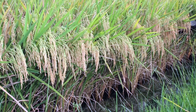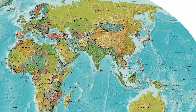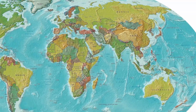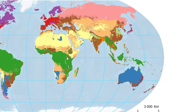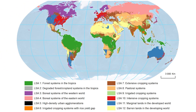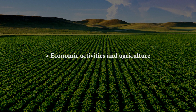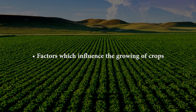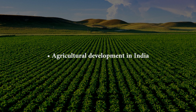In spite of all these odds, India has made commendable progress in agriculture after independence. In the era of globalization and liberalization, all the countries are interdependent and change in one country influences life in other parts of the world. In this chapter on agriculture, we will learn about agriculture not only in India but also in other parts of the world. The forthcoming episodes will cover: economic activities and agriculture, factors which influence the growing of crops, types of agriculture, major crops of the world and their favorable conditions, and agricultural development in India.